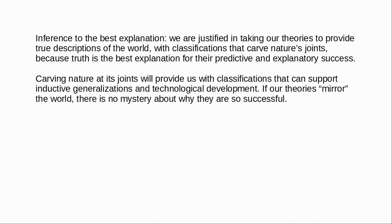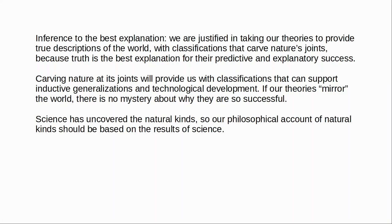Catherine Koslicki, in 'Natural Kinds and Natural Kind Terms', suggests that those who are realists about natural kinds are typically motivated by the role these kinds play in: one, induction and prediction; two, the laws of nature; and three, causal explanation. So the general assumption underlying these realist approaches is that natural kinds are connected with the inductive and explanatory success of science. Our best scientific theories track the natural kinds, and this explains the predictive and explanatory successes of those theories. The best explanation for the success of science is that science carves nature at its joints.